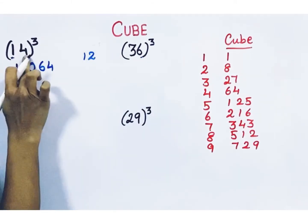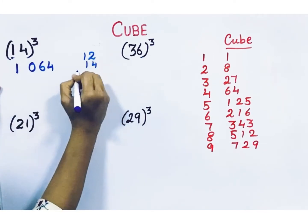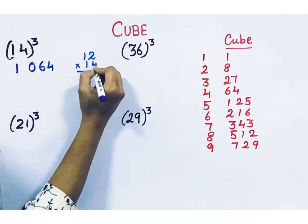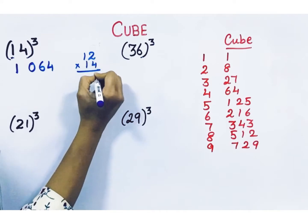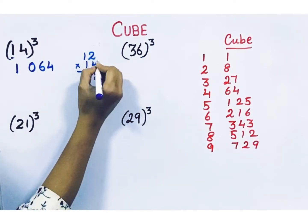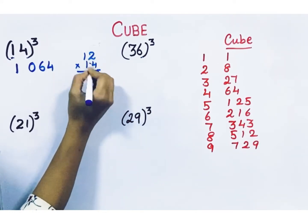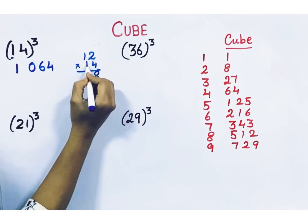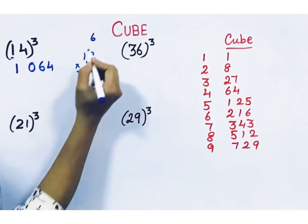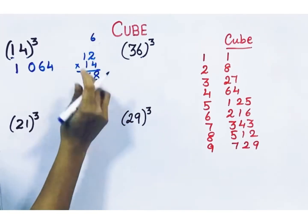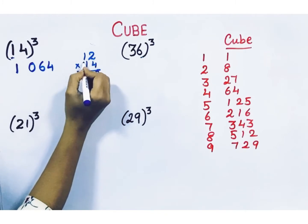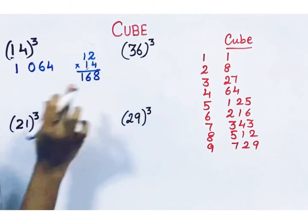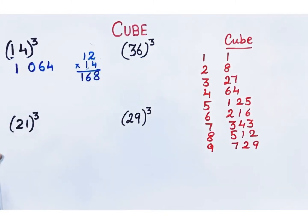Take this number 12 and do multiplication with 14. First vertical: 2 times 4 is 8. Then crosswise: 1 times 4 is 4, plus 1 times 2 is 2 — that's 6. Next, vertical: 1 times 1 is 1. So the multiplication answer is 168.